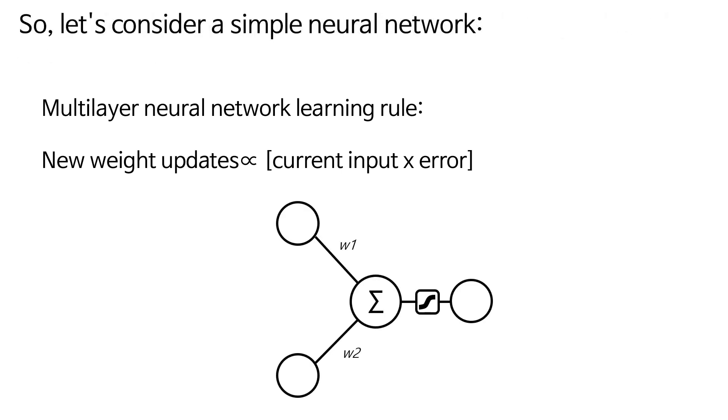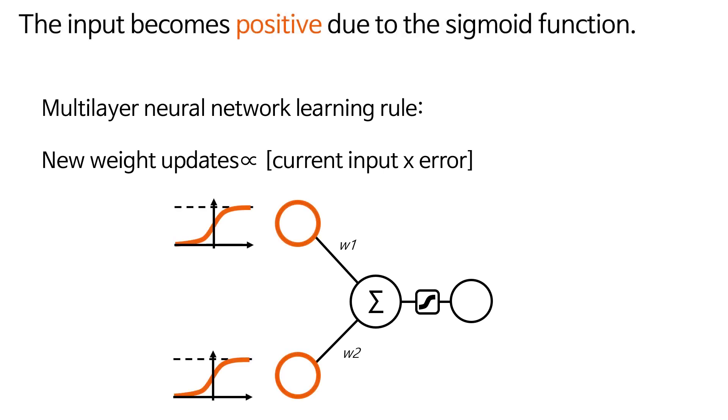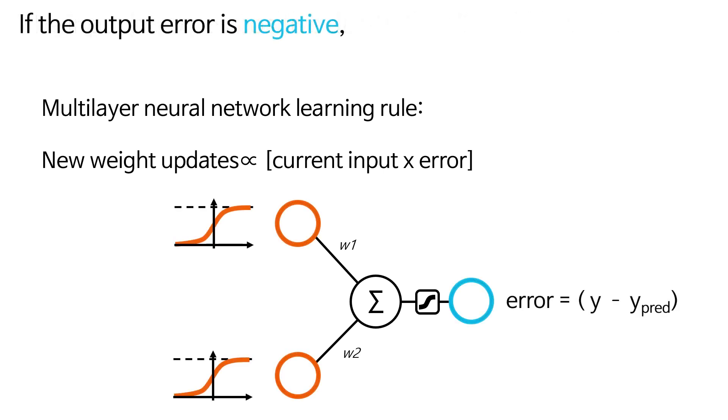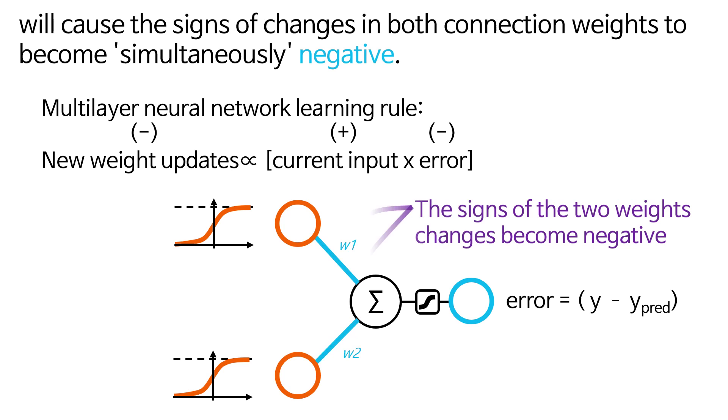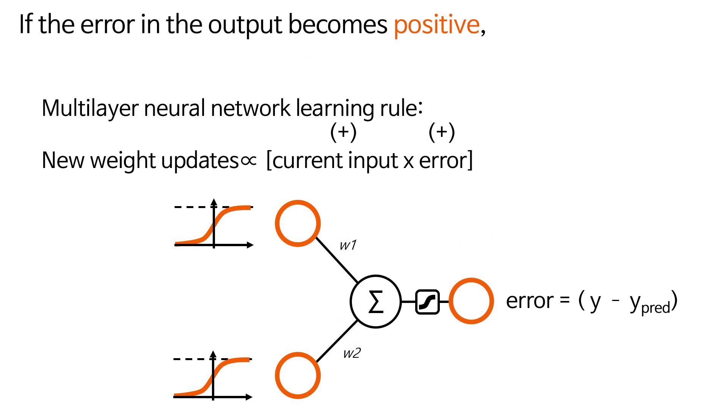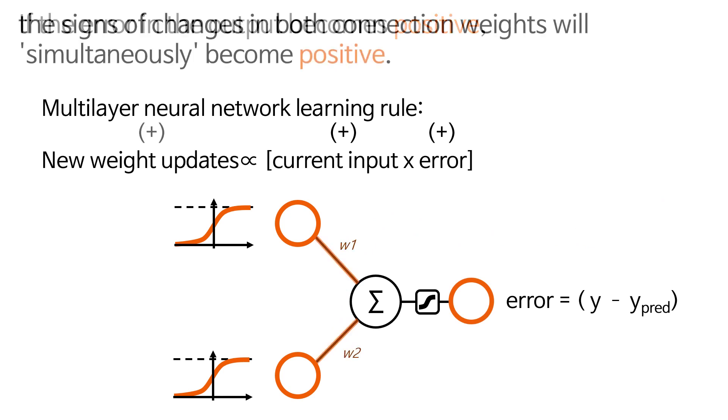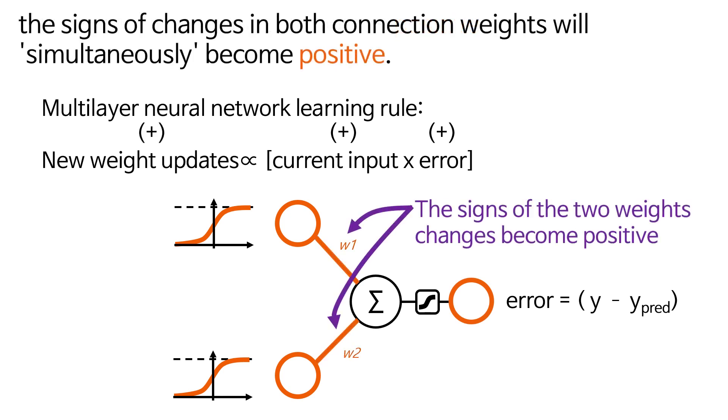So, let's consider a simple neural network. The input becomes positive due to the sigmoid function. If the output error is negative, the current input and the product of the error will cause the signs of changes in both connection weights to become simultaneously negative. If the error in the output becomes positive, the signs of changes in both connection weights will simultaneously become positive.